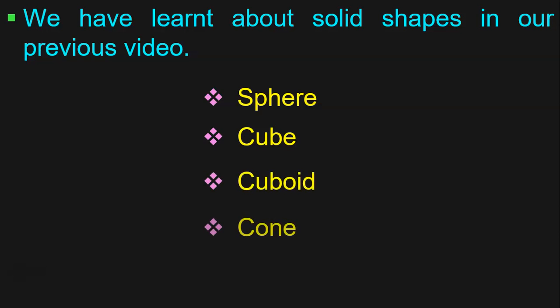We have learned about solid shapes in a previous video for Class 2. What are the different solid shapes? They are sphere, cube, cuboid, cone, and cylinder. To know more details about each of these solid shapes, please do visit my previous video on introduction to solid shapes for Class 2.